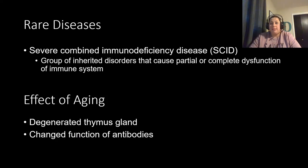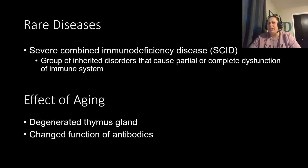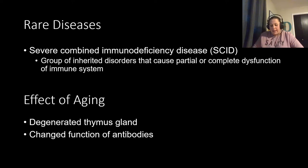SCID (severe combined immunodeficiency disease) is a rare, inherited disorder causing partial or complete dysfunction of the immune system — like the 'boy in the bubble' case. Individuals are born with a very limited or no immune system at all due to a genetic defect.